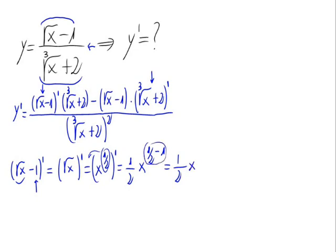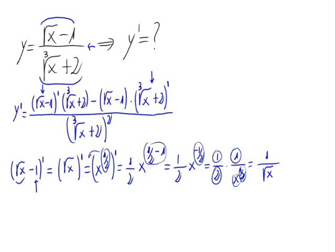So this equals 1 half times x raised to minus 1 half, and with a negative exponent this is 1 half times 1 divided by x raised to 1 half. Multiplying this out, we get 1 divided by 2 times the square root of x — the index 2 gives us the square root and x raised to 1.